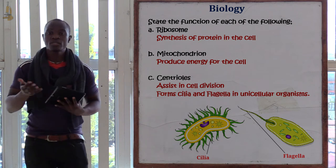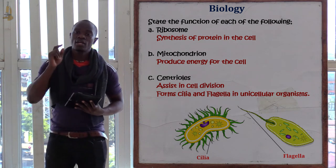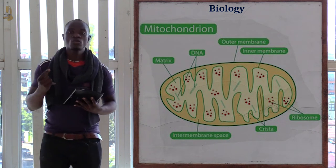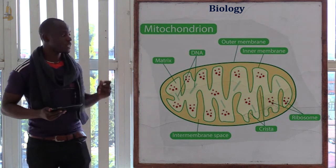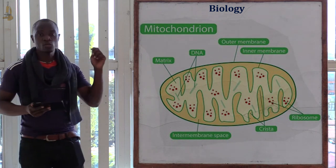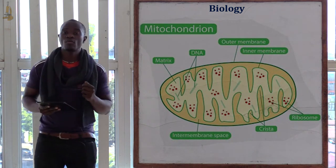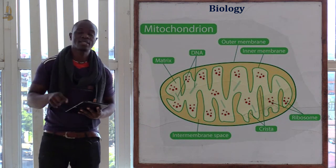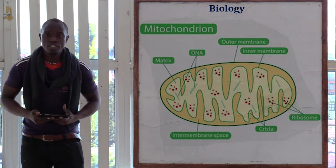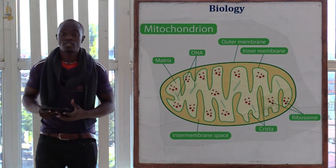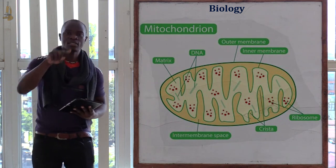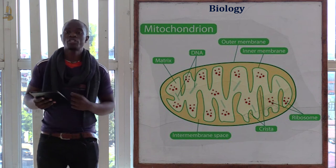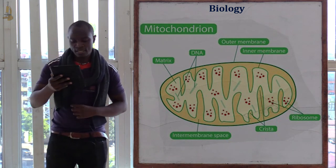The mitochondrion produces energy for the cell. It has an outer membrane, inner membrane, cristae, and matrix. The cristae are greatly folded to increase the surface area over which the respiration process takes place.